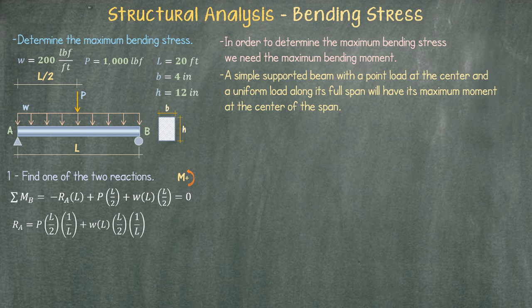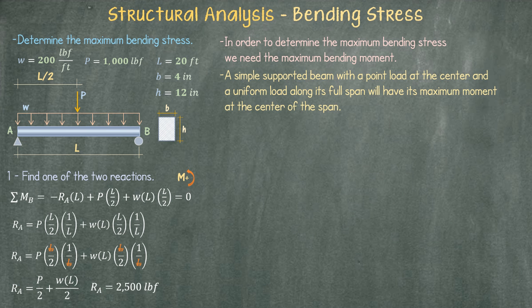Using our algebra skills we can cancel out a few L's. We then clean up our equation. Finally we plug in the values for the variables and determine that the reaction at point A is 2500 pounds force.